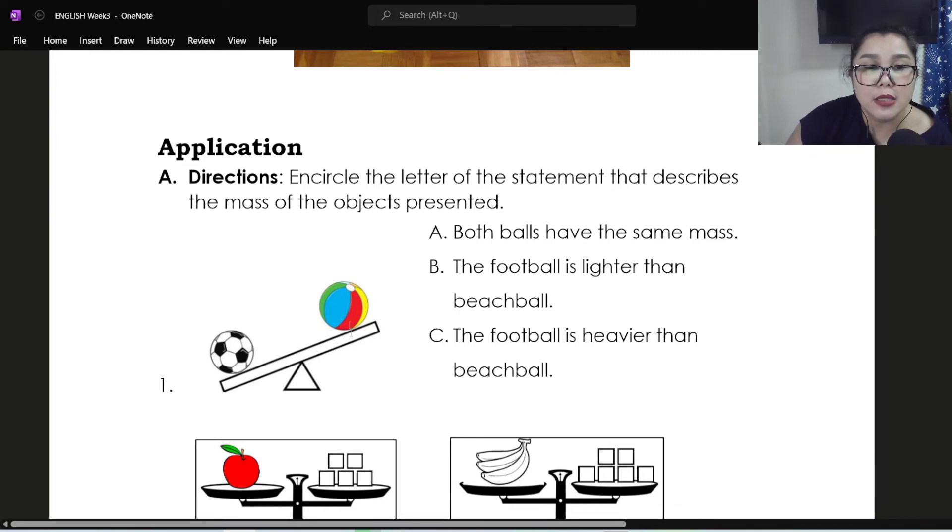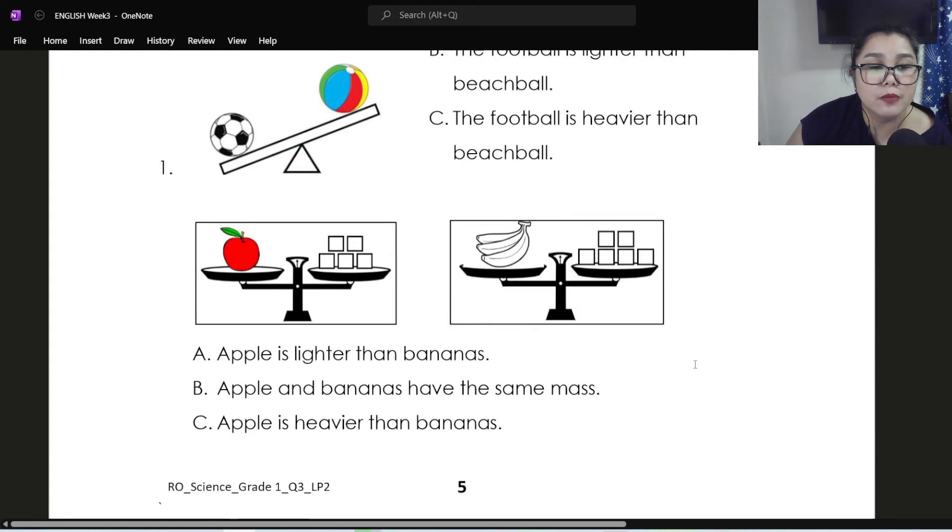Next, for number two, we have here an apple which is equal to five blocks. This banana is equal to six blocks. So which one is a correct statement about this? A, apple is lighter than bananas. B, apple and bananas have the same mass. C, apple is heavier than bananas.